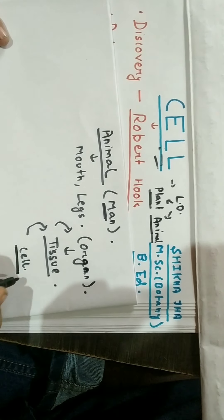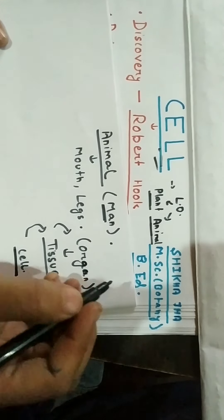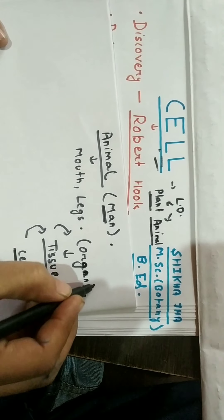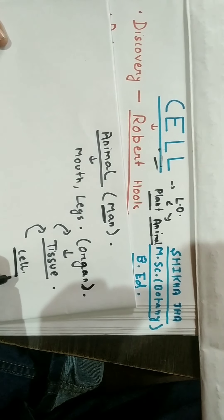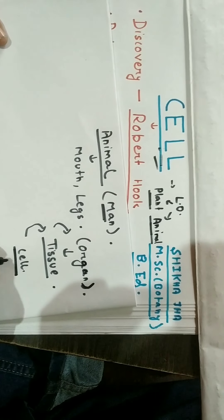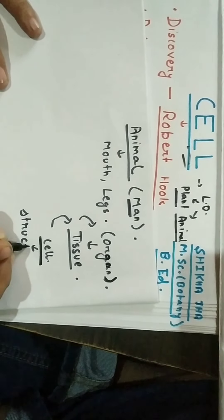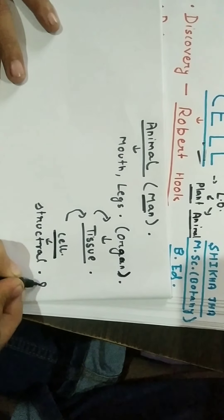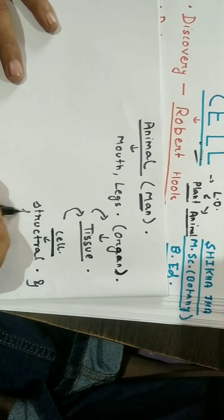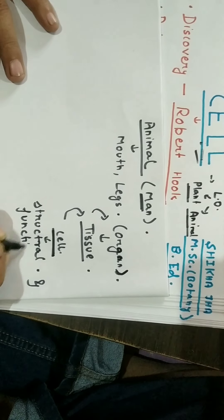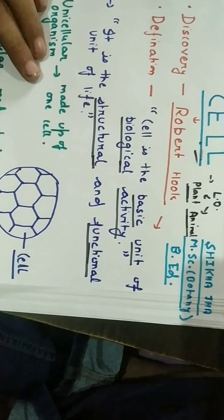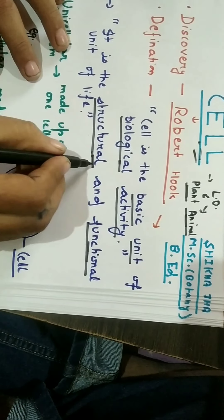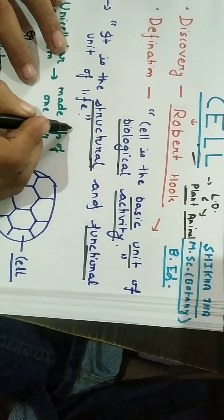The cell defines all the functions of the animal. All the organs, how they function, are ultimately defined by the cell. So we can say that the cell is the structural as well as the functional unit of life. Here I have written the definition: it is the structural and functional unit of life.